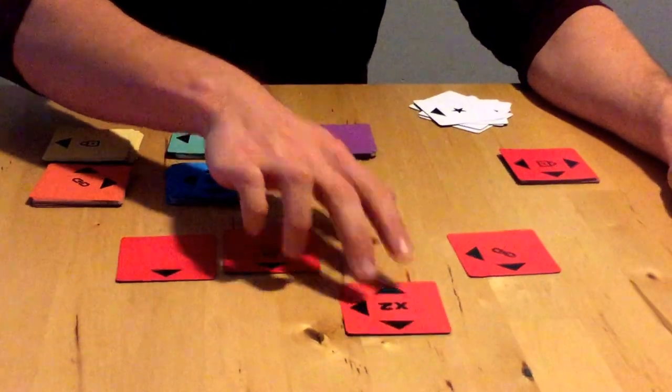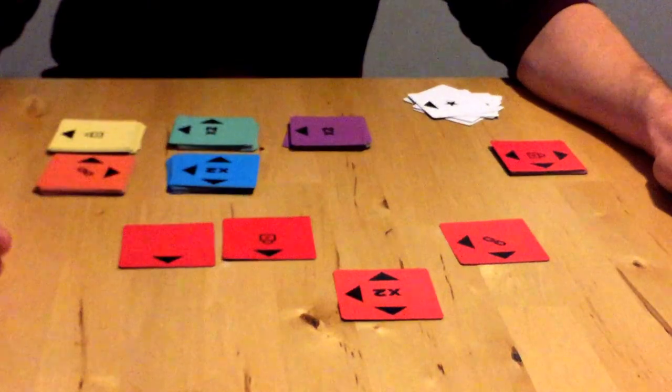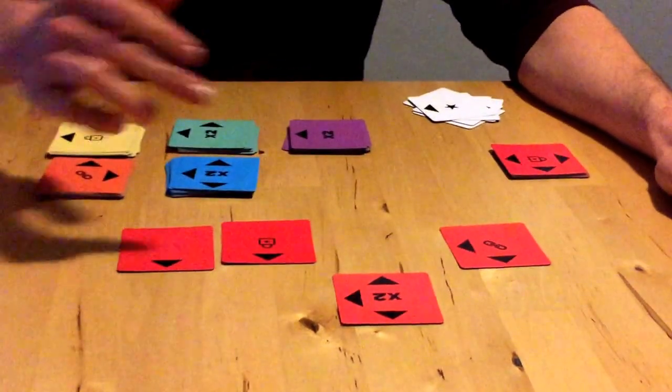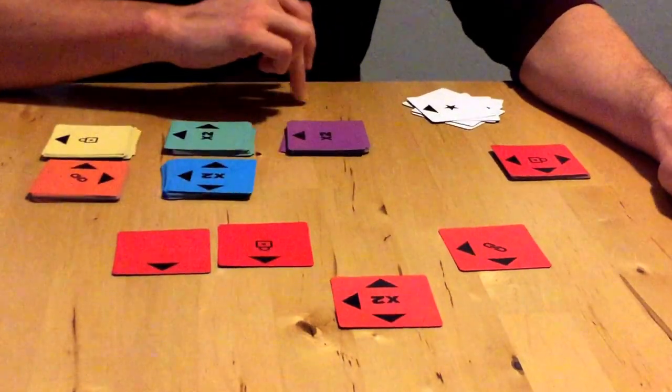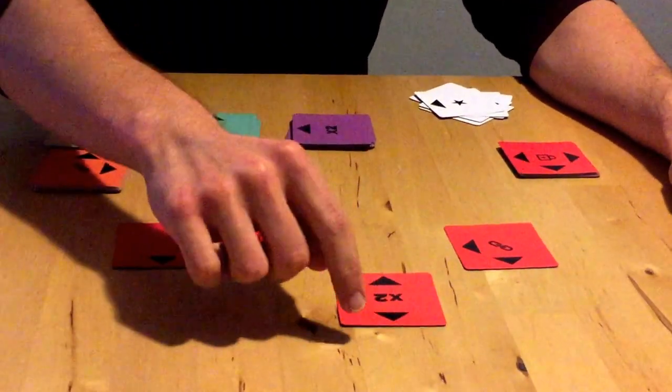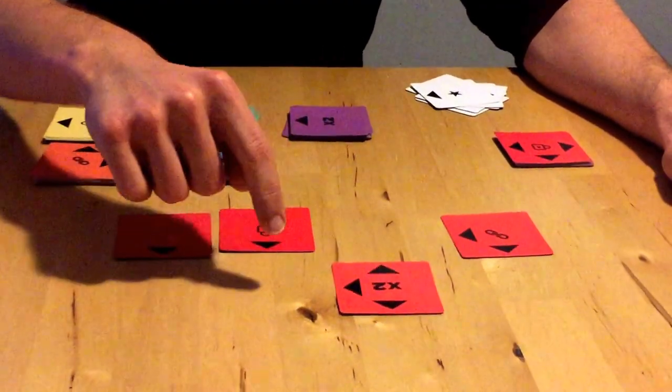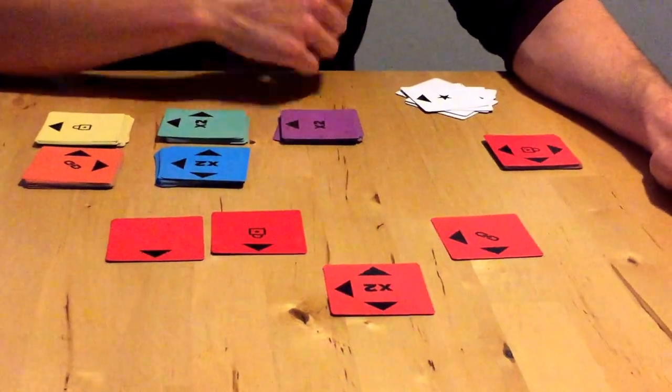Next, we have our double card. The double card means that for every arrow facing on this card, we're going to flip over the next two cards instead of just the adjacent cards. So on this one there are three arrows so we would flip over the cards here and here, here and here, and also here and here based on the ability of that card.